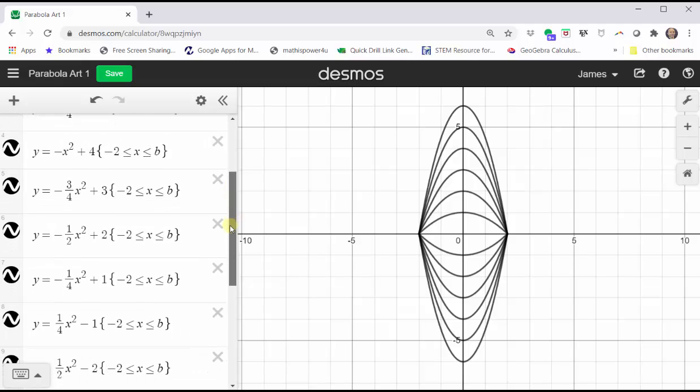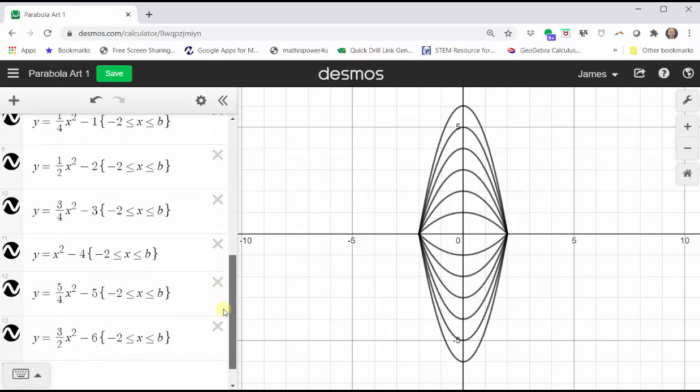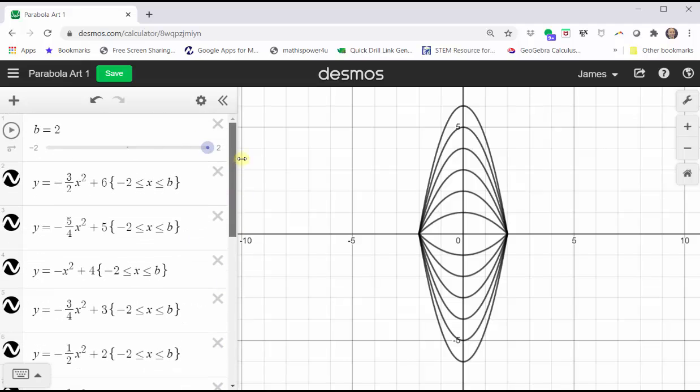X is greater than or equal to negative two and less than or equal to b. By using b as the upper bound of the restriction, I was able to create a slider. And notice the values of b start at negative two and go to positive two.